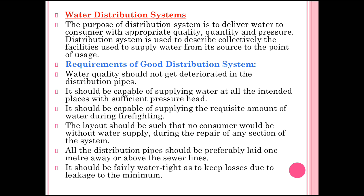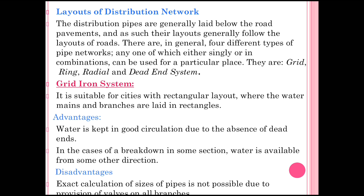All distribution pipes should preferably be laid one meter away or above the sewer lines. The system should be fairly watertight to keep losses due to leakage to the minimum. Regarding the layout of the distribution network: distribution pipes are generally laid below the road pavement, and their layouts generally follow the layouts of roads. There are in general four different types of pipe networks, any one of which — either singly or in combination — can be used: grid iron, ring, radial, and dead-end systems.